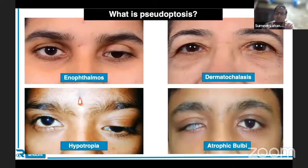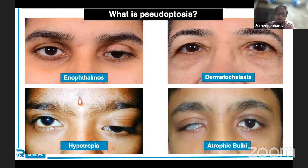You will be asked what is pseudoptosis. These four conditions mimic ptosis but are not true ptosis: enophthalmos, dermatochalasis, hypotropia, and phthisis bulbi — all mimic a drooping lid appearance but none of them is actually ptosis.